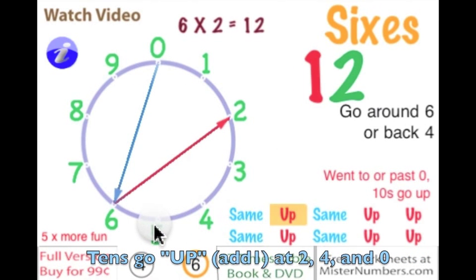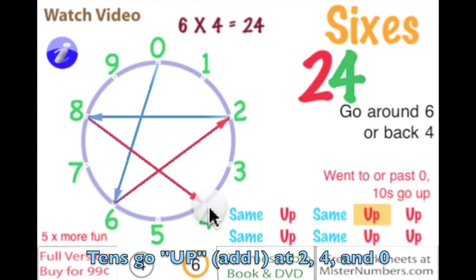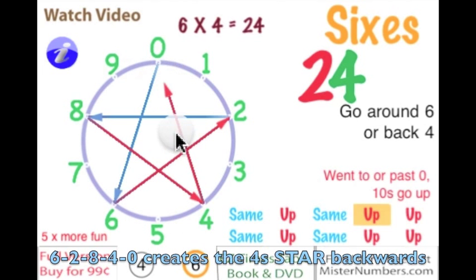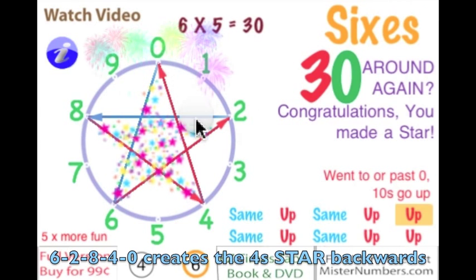Go to 8, go around to 4, again we've gone past 0 so the line is red, and back to 0. And 6, 2, 8, 4, 0 has created another star, and you can watch the fireworks.